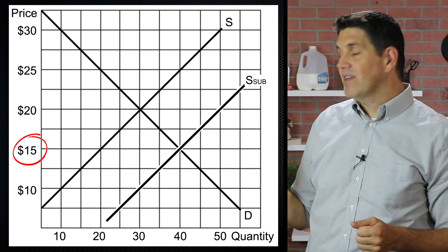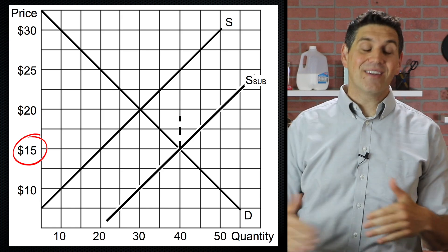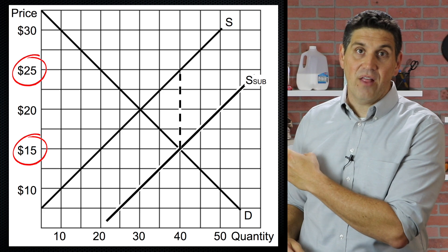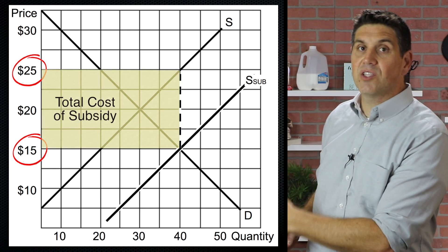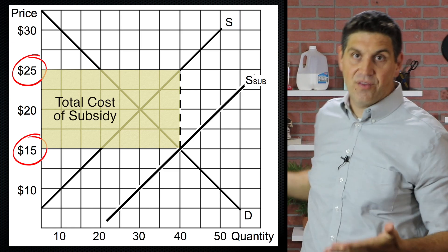That new equilibrium price of $15 is how much consumers are paying for chickens. But don't forget, producers get another $10 on top of that. So how much the producers get to keep is $25. So that $10 per chicken subsidy times the 40 million chickens we're producing represents the amount that taxpayers have to pay the chicken farmers.